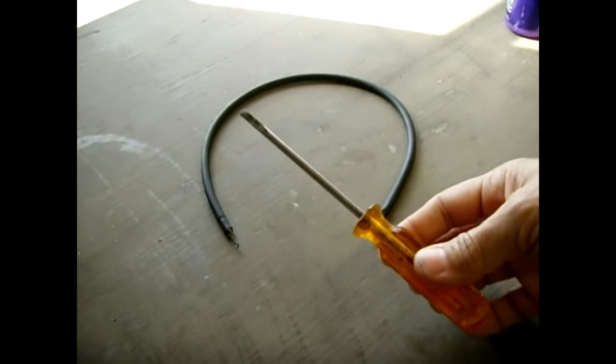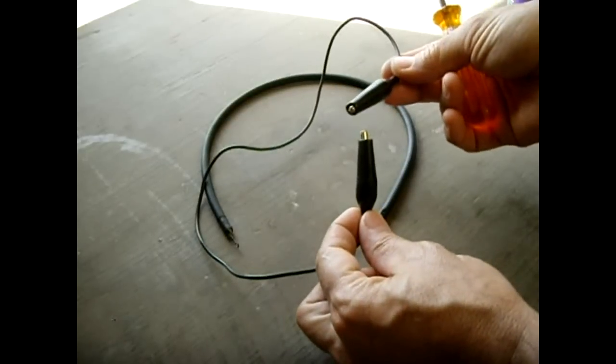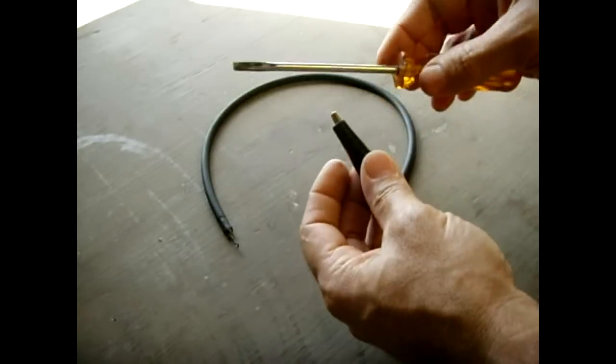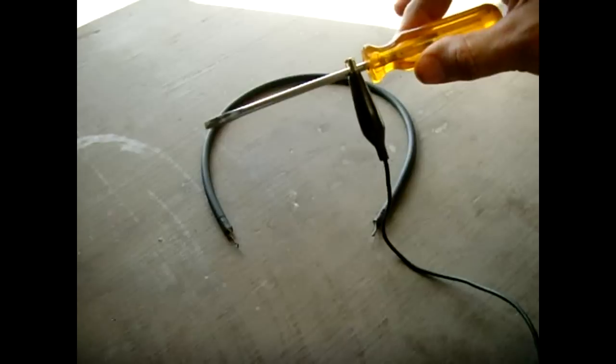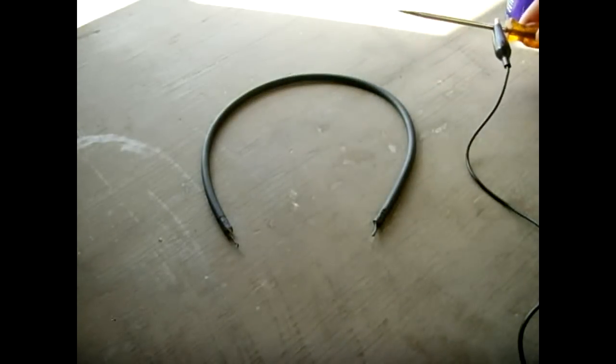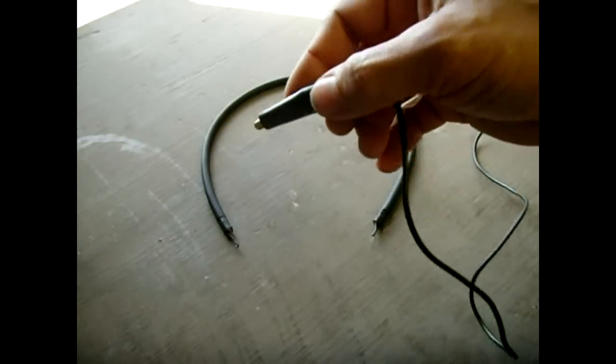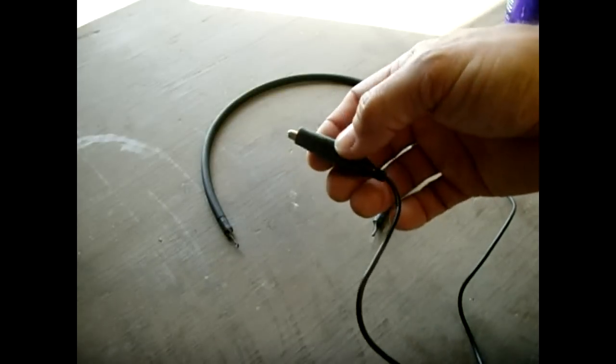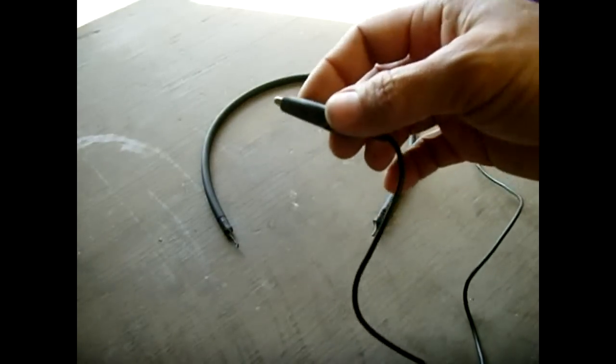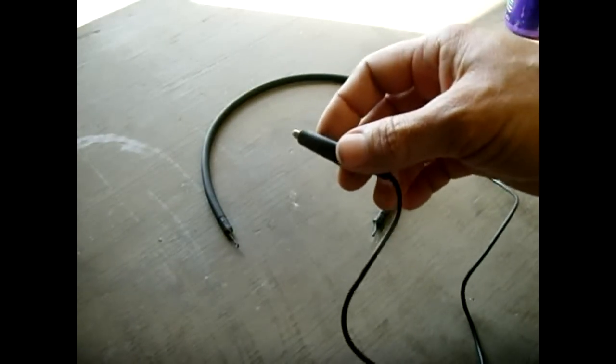you're going to require a screwdriver, a jumper wire like you see here. You're going to clip one end of the jumper onto the screwdriver, only hold it by the handle. The other end you're going to connect to an engine ground, a bolt on the engine, you could even put it on the battery negative. As long as it's on a metal part of your engine, you should be fine.